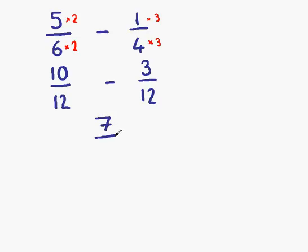What we need to do now is check to see if it can be simplified. Is there any number which goes into 7 and also into 12? The answer is no. So 7 twelfths is our final answer.